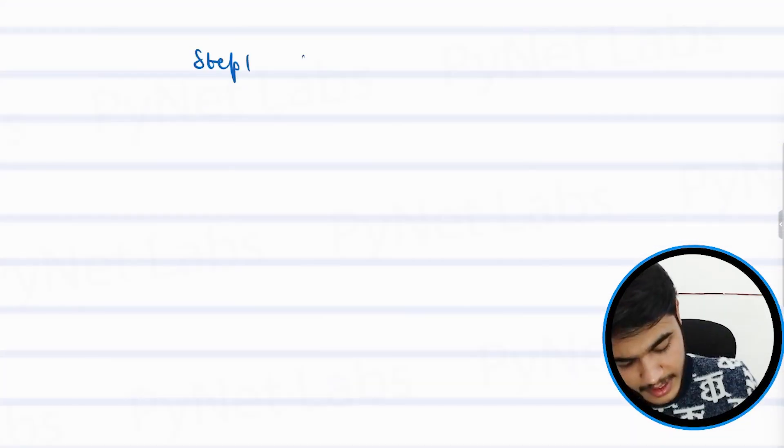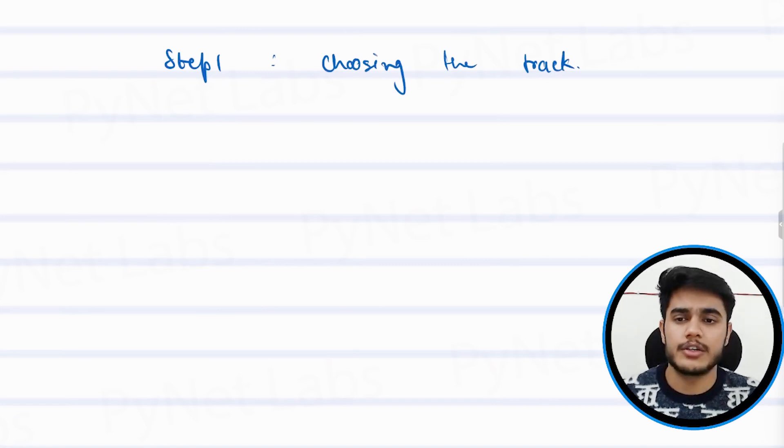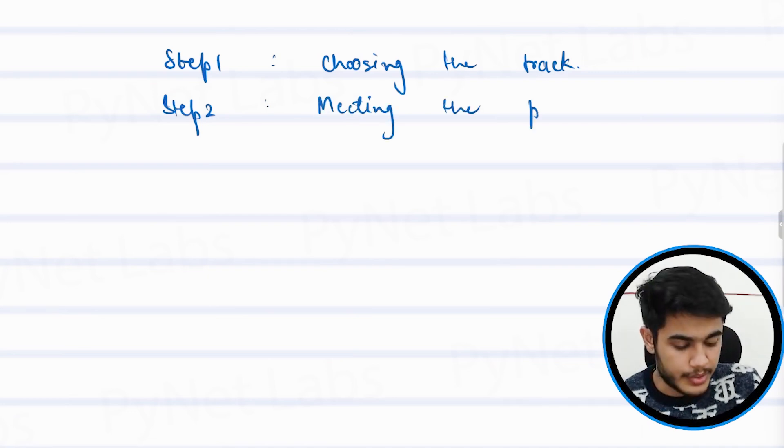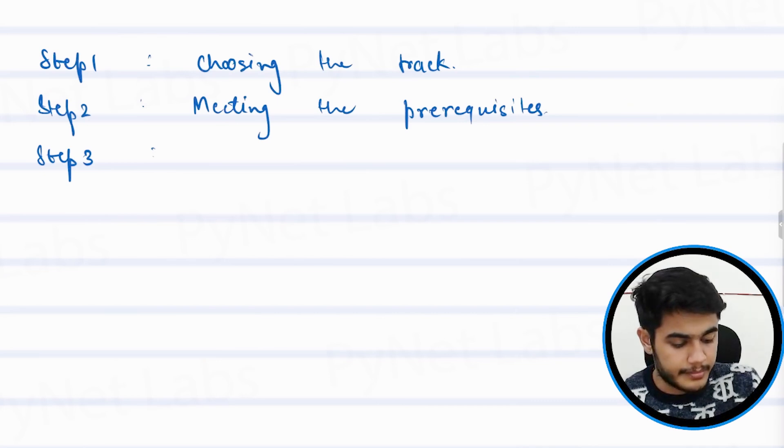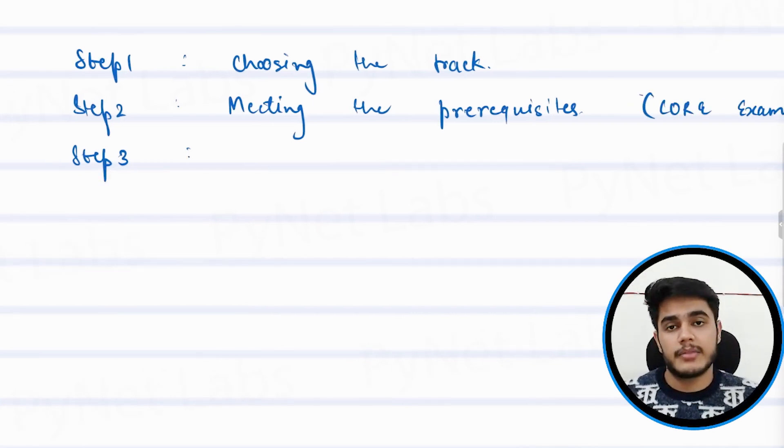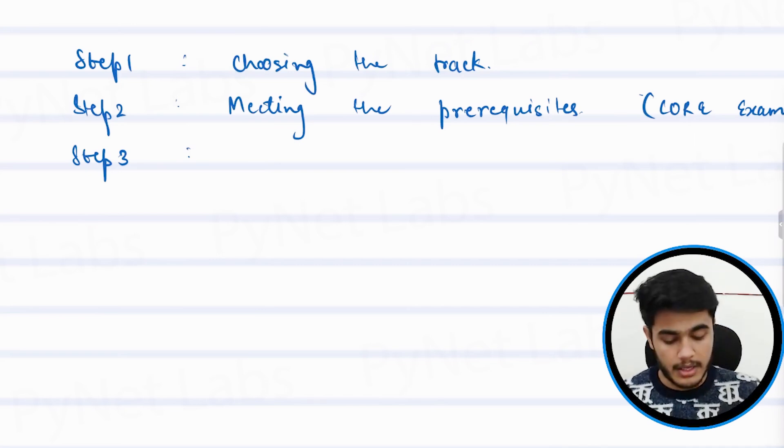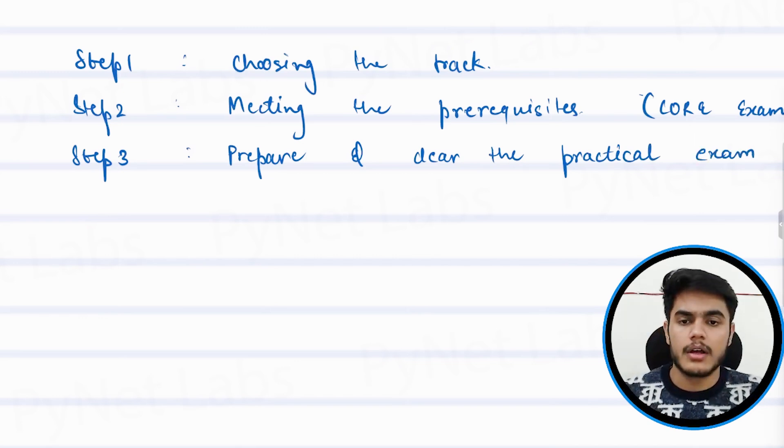Step number one on your journey would be choosing the track. Step two would be meeting the prerequisites, getting the core exam. Depending upon which track you have selected, there are different core exams that work as the eligibility criteria. Then, finally, prepare and clear the practical exam. This practical exam is also known as lab exam. After you get your lab exam clear, you are CCIE.